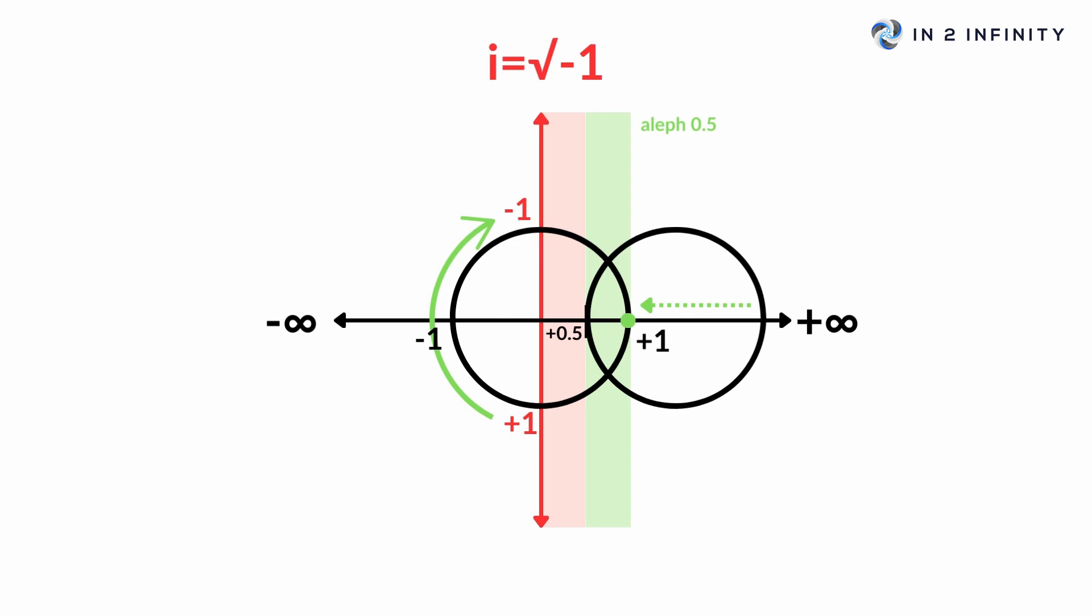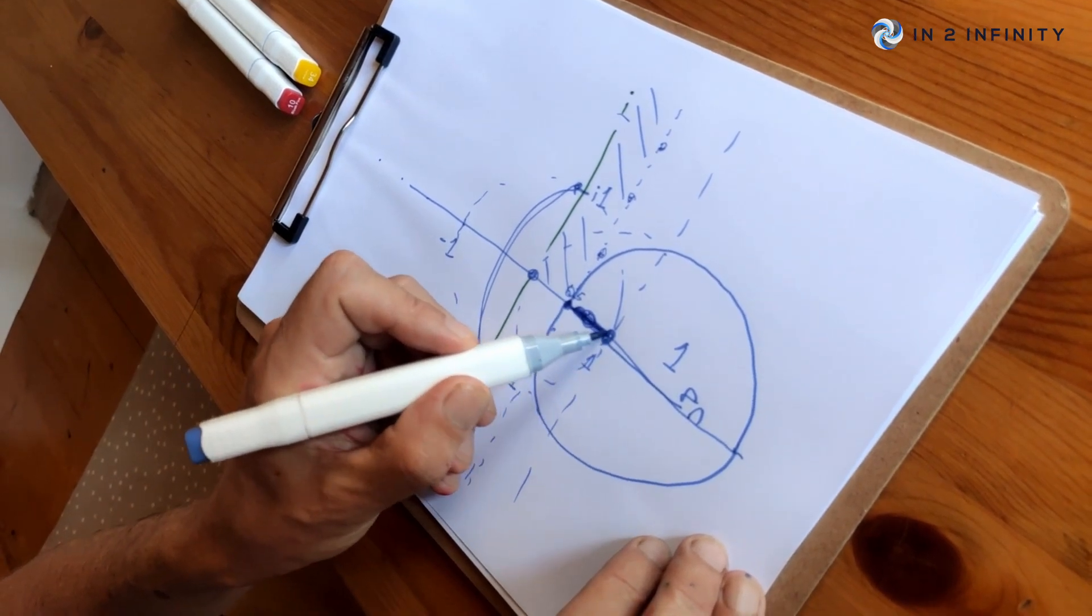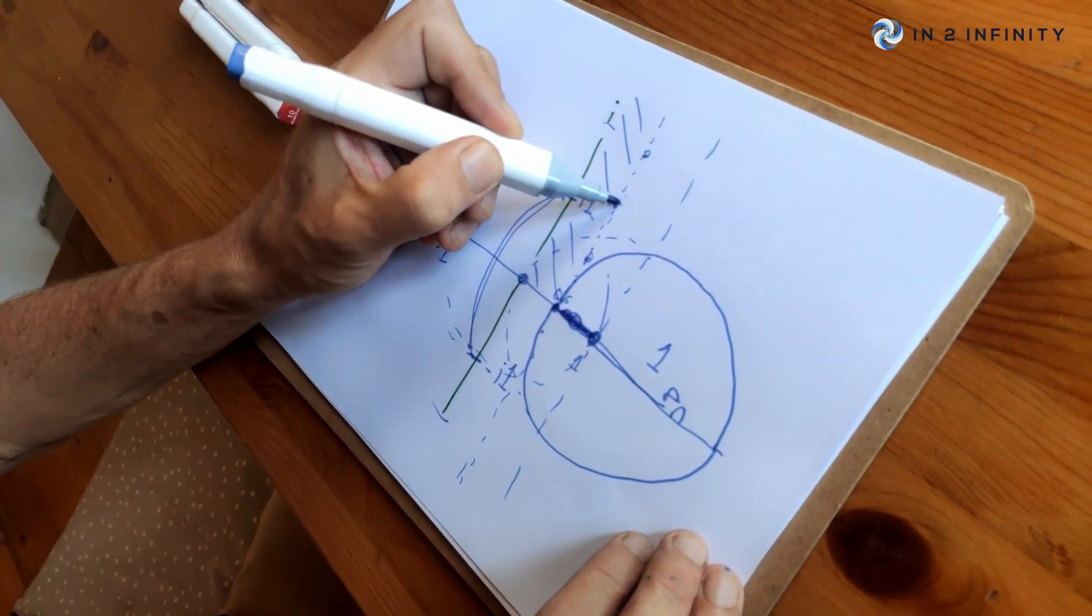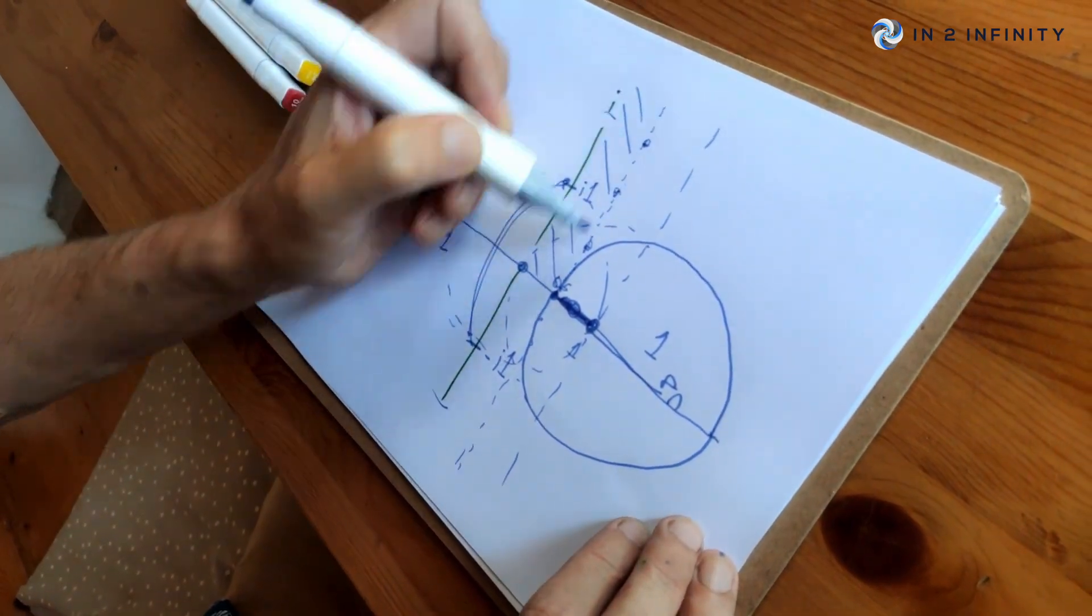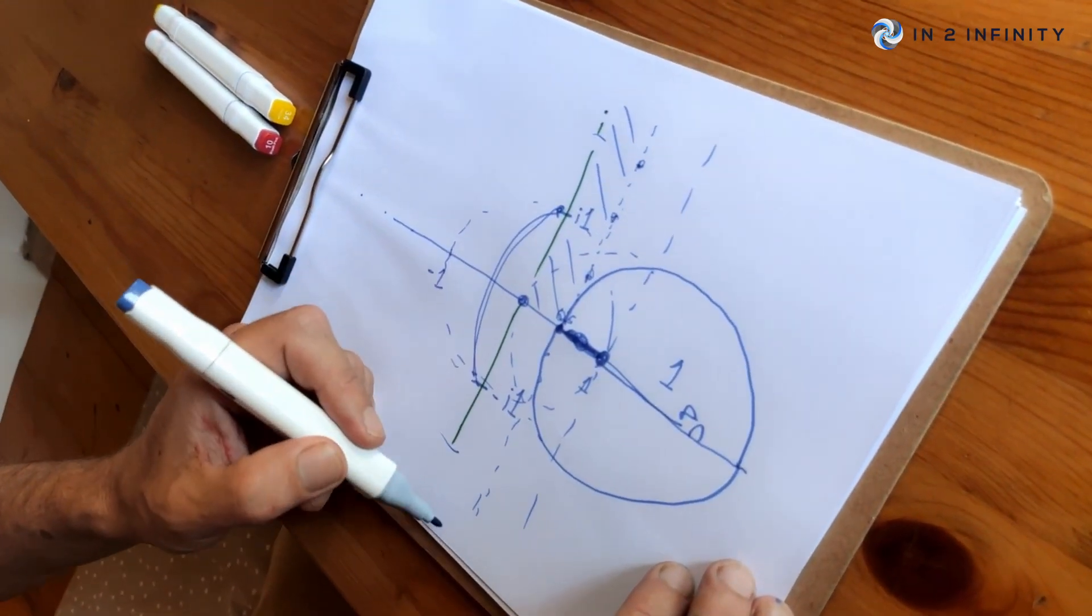What starts to happen is it starts to converge at a point here, doesn't go all the way up to here because of this double density. It compresses all of that number space into this space here. When you follow the lines through, this becomes the zero - the zero line just pushes the zero line up.